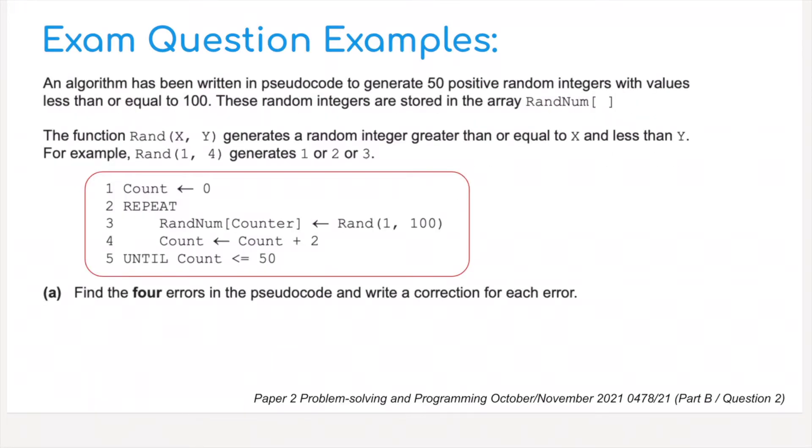I'm going to use this first example taken from the 2021 paper 2, question 2. An algorithm has been written in pseudocode to generate 50 positive random integers with values less than or equal to 100. These random integers are stored in the array rand number, and this is a list. Another word for array is list, certainly in Python.